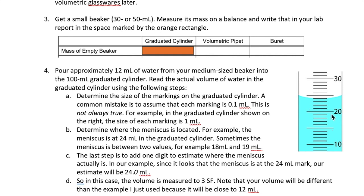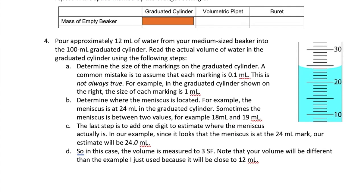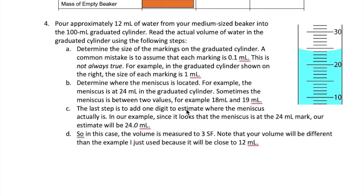The size of these marks depends on the size of the graduated cylinder that you're using. It may be 1 milliliter, it may be 0.1 milliliter, it may be 0.01 or some other value. So just to illustrate this example, I have a graduated cylinder here in this picture and the size of the mark is actually 1 milliliter. I know this because there are 10 milliliters and there are 10 marks, so that means that each mark must be 1 milliliter.